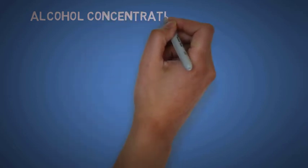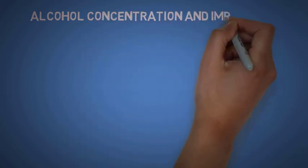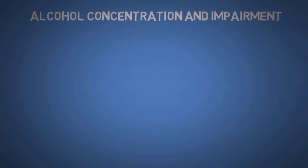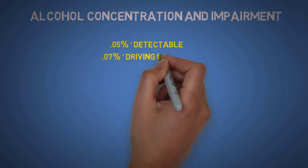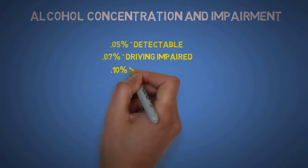Now, alcohol concentration and its impairment on the body is based upon how much alcohol that you have. At 0.05 percent it just becomes detectable, 0.07 you have your driving impairment.